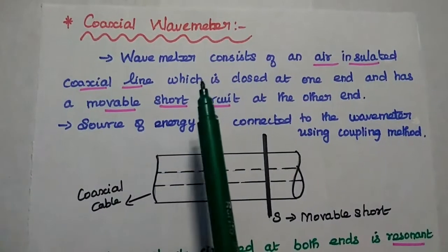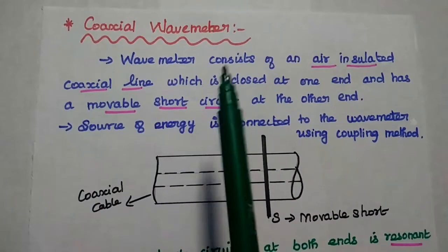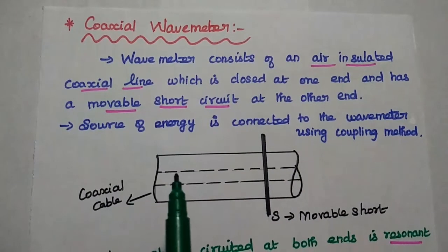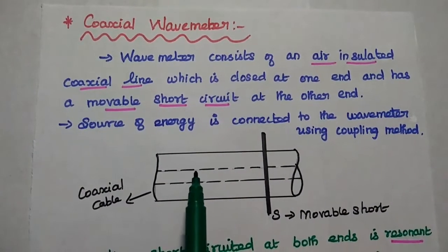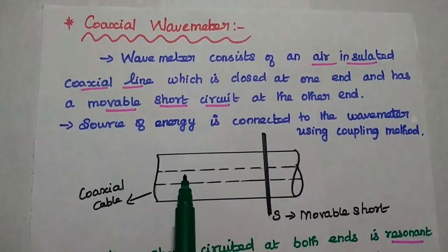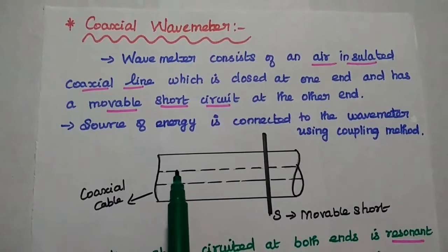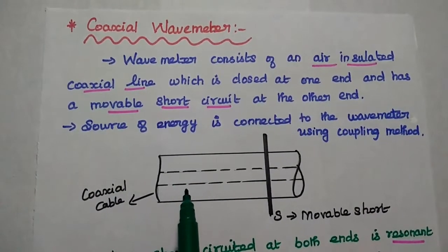The next method is coaxial wave meter. The wave meter consists of an air insulated coaxial line. Air insulated means in coaxial cable, there are two conductors: inner conductor and outer conductor. Air is filled in between inner and outer conductor.